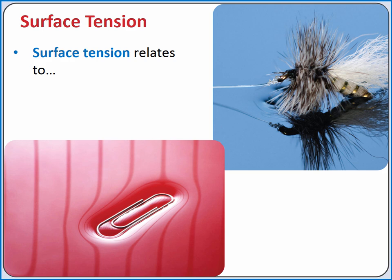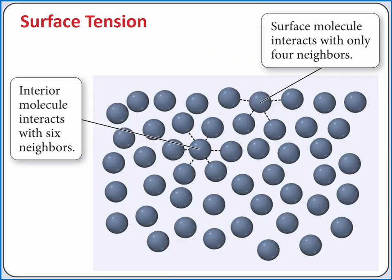Surface tension relates to the tendency of liquids to minimize their surface area. We can see the effects of surface tension by floating a paperclip on water. Although the paperclip is denser than water and will sink if it breaks the surface, the surface tension provides enough force to keep it above the surface. To understand the origin of surface tension, we can consider intermolecular forces.